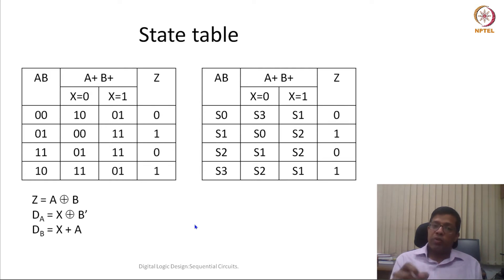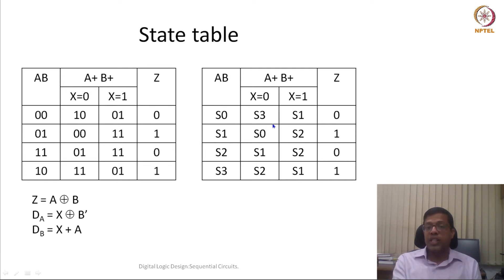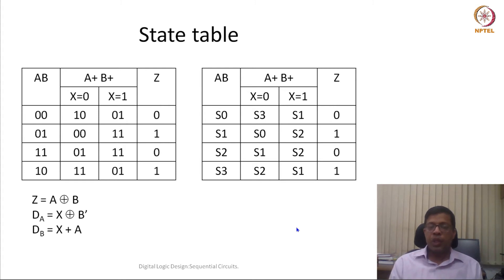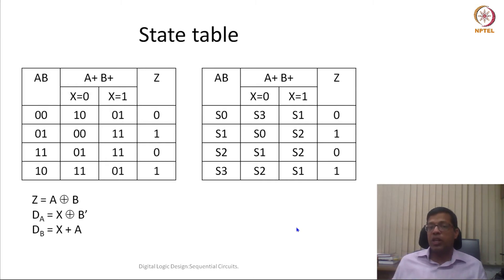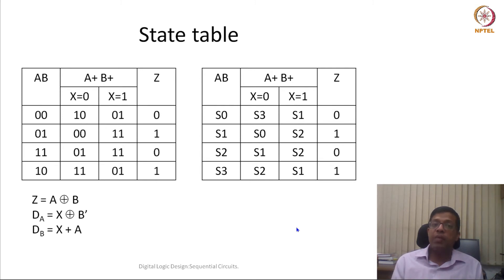It is more systematic to name all these states as state numbers: S0, S1, S2 and S3. If we map 0,0 as S0, 0,1 as S1, 1,1 as S2, and 1,0 as S3, we can rewrite the table as a state table. This state table characterizes our sequential circuit.